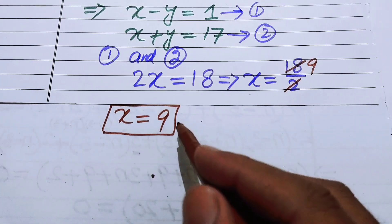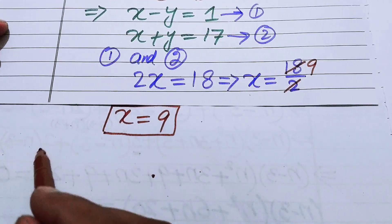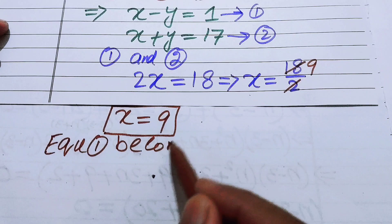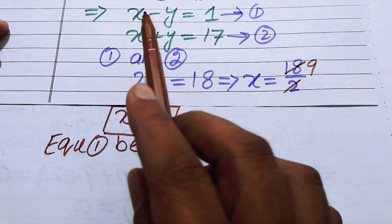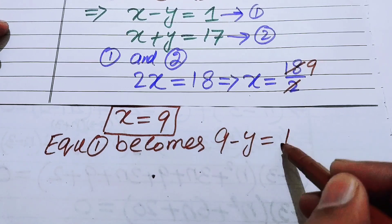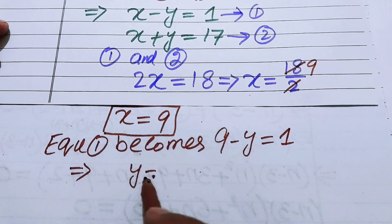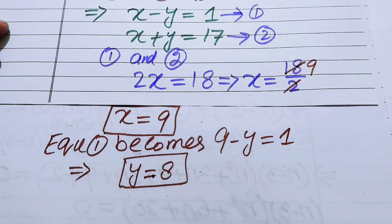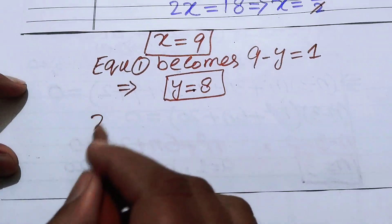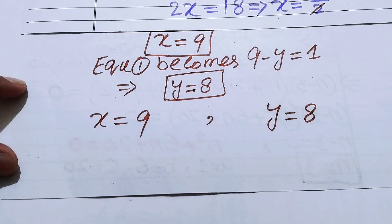Now we find the value of y by substituting x equals 9 into equation 1: 9 minus y equals 1, so y equals 8. We now have x equals 9 and y equals 8.